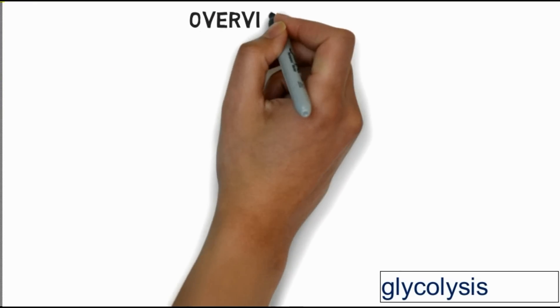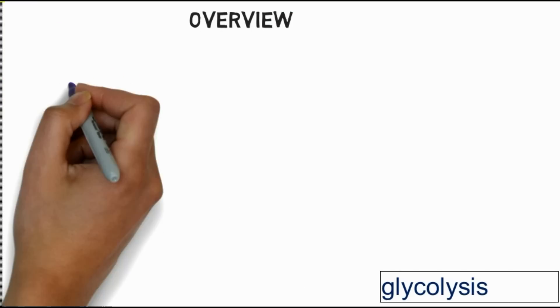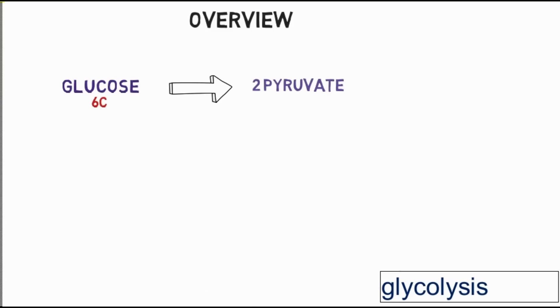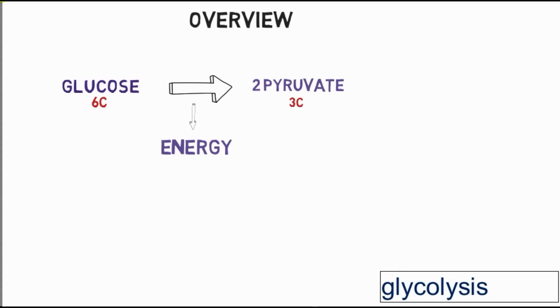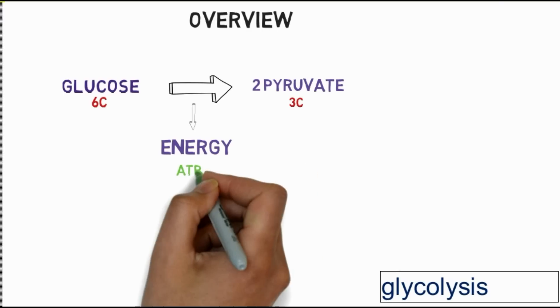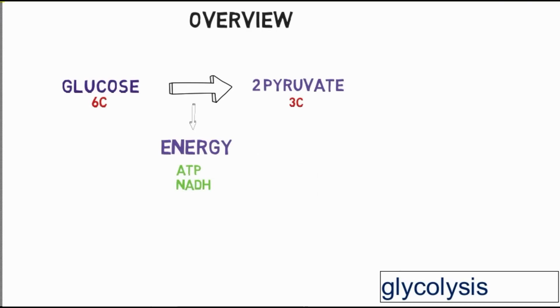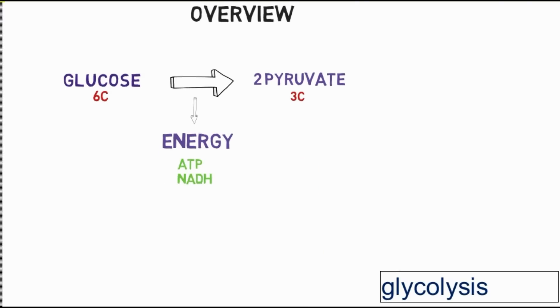Now let's take an overview of glycolysis. Glucose is a six-carbon compound. It is converted into two pyruvate molecules, which are three-carbon compounds, and energy is released in the form of ATP and NADH.